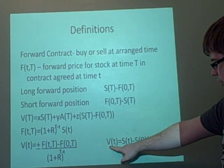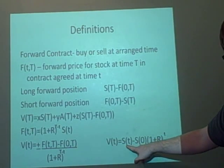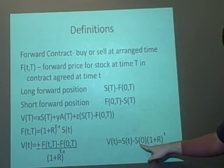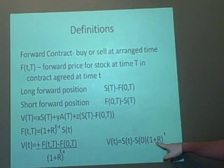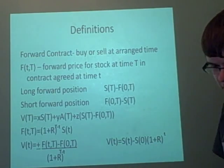And this is the final one. The Wealth is the Stock at time t minus the Stock at time zero, and the rate, so (1+R) to the power little t.